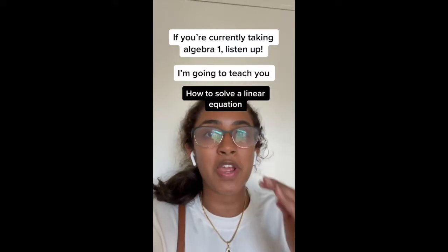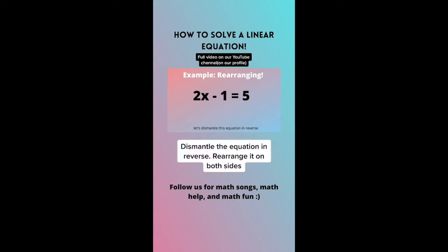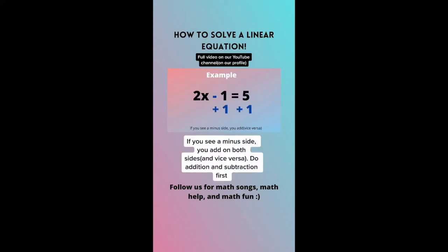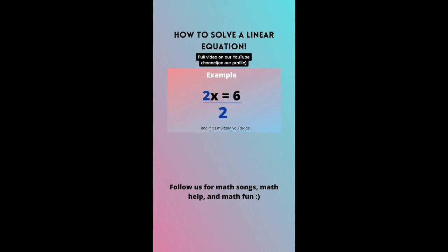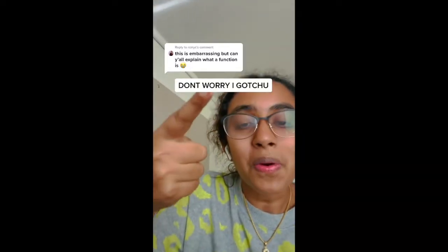I'm going to teach you how to solve a linear equation in just 30 seconds. The balance should uphold no matter what we try. Dismantle the equation in reverse, rearrange it on both sides. Order of operations in reverse — let's solve this with pride. If you see a minus sign, you add. And if it's multiply, you divide. The items are not changing; they're simply rearranging. Don't worry, I got you.